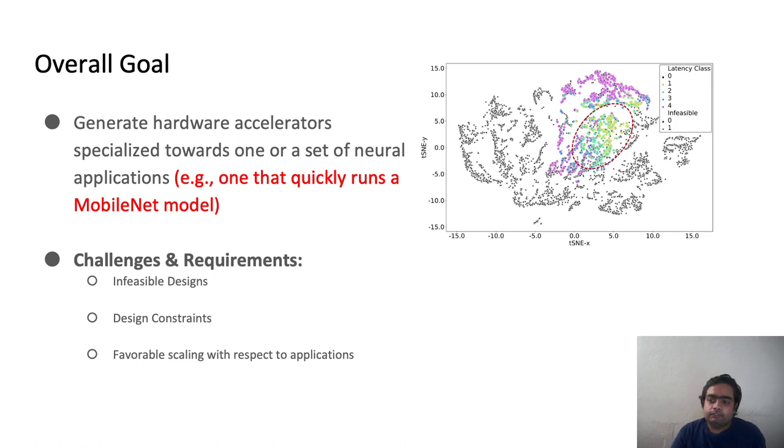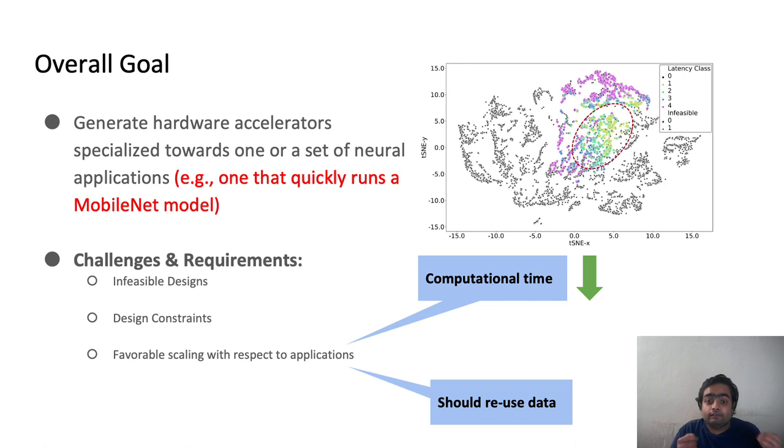And finally, we want to make sure that whatever method we come up with attains a favorable scaling as more applications are added or as constraints change. In particular, we want our method to take less time in terms of producing a good accelerator, and we want to make sure that our method can reuse data or reuse knowledge whenever constraints or applications change. We'll present a method that enjoys both of these benefits.